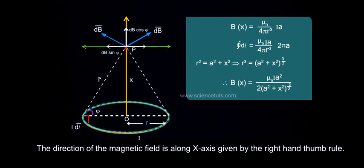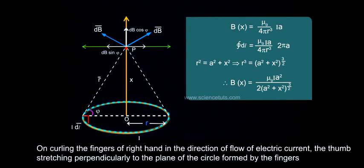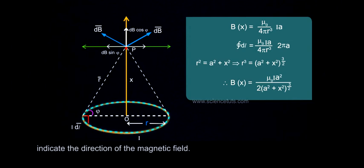The direction of the magnetic field is along x-axis given by the right-hand thumb rule. On curling the fingers of right hand in the direction of flow of electric current, the thumb stretching perpendicularly to the plane of the circle formed by the fingers indicates the direction of the magnetic field.